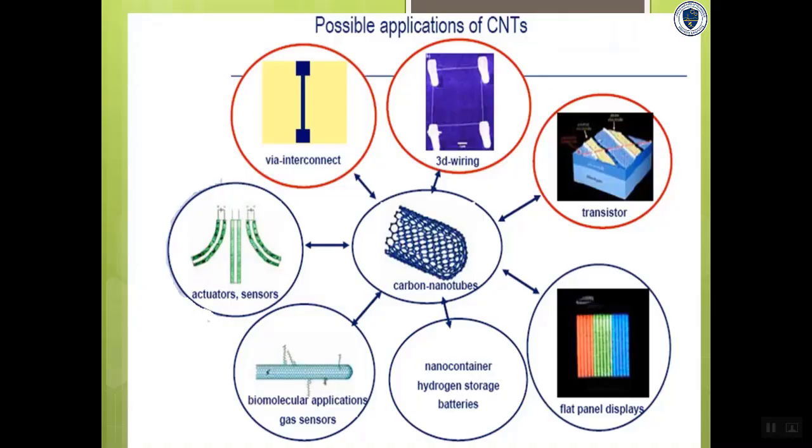They are shortly called as CNTs. Because of these CNTs magic properties they are used in 3D wiring, transistors, flat panel displays, hydrogen storage batteries, various sensors, actuators and in their connections. Also nowadays these nano materials are converted into nano bots and they are injected inside the patients which cures many diseases including cancer cell destruction.